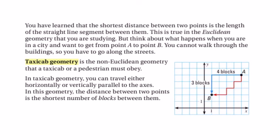In the past we've learned that the shortest distance between two points is the length of a straight line segment between them. This is true in Euclidean geometry. So there are different types of geometries. The one we're studying is Euclidean.